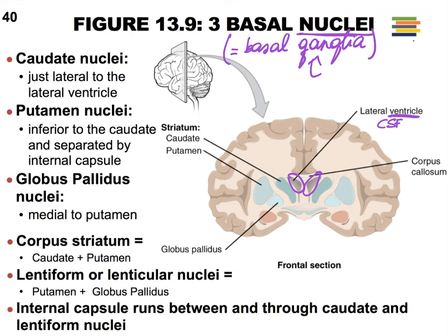We have two other nuclei referred to as the lentiform or lenticular nuclei — the putamen and the globus pallidus together. They get that name because they collectively look like a lens. In a more sagittal cut of the brain, they look more like the lens of an eyeball.